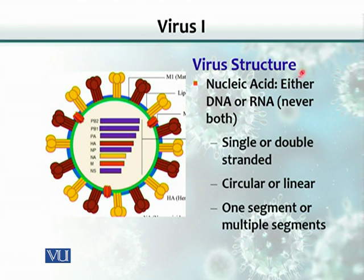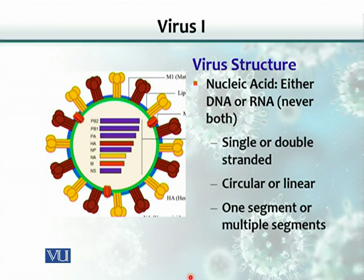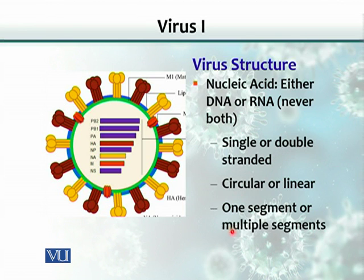Now, virus structure. As mentioned, viruses are composed of nucleic acid. The nature of the nucleic acid is either DNA or RNA, and never both — you would never find both DNA and RNA together in a virus. That DNA or RNA could be single or double-stranded, could be circular or linear, and could be just one segment or could be multiple segments. Some viruses would have just one linear or circular DNA or RNA, but some would have more segments.